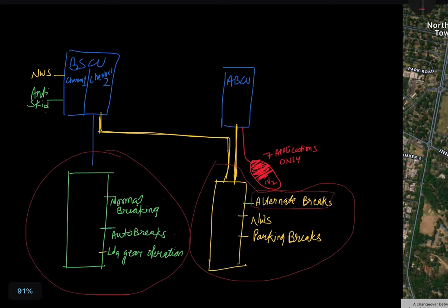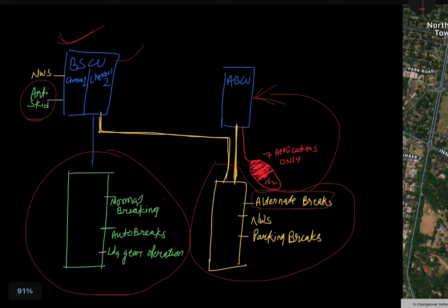In this scenario of alternate braking: if at least one channel of BSCU is available and the nose wheel steering and anti-skid switch is ON, then the anti-skid system will be available with the help of BSCU, while alternate braking is controlled by ABCU. So in alternate braking with anti-skid, the anti-skid function is provided by BSCU and the alternate braking is provided by ABCU.